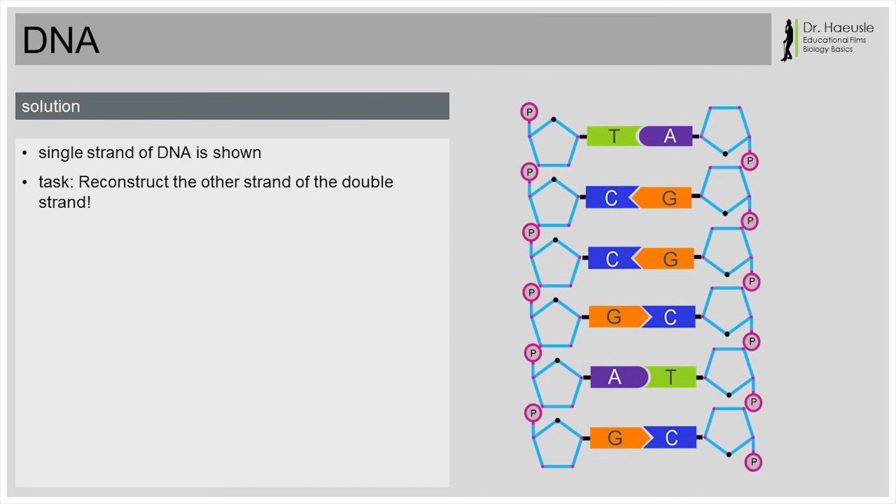But the DNA has another characteristic that we haven't talked about yet. The two strands of the double strand are anti-parallel. Anti-parallel? The two strands run in opposite directions. They are called anti-parallel.